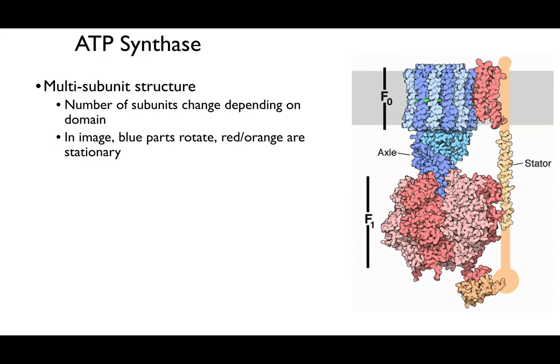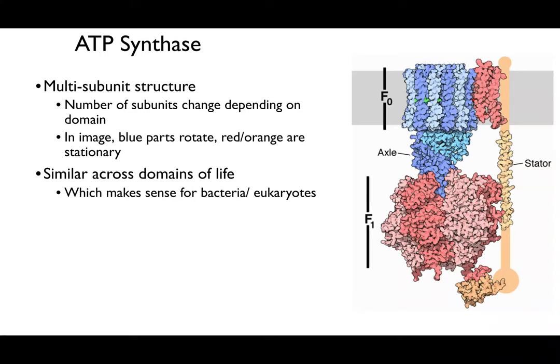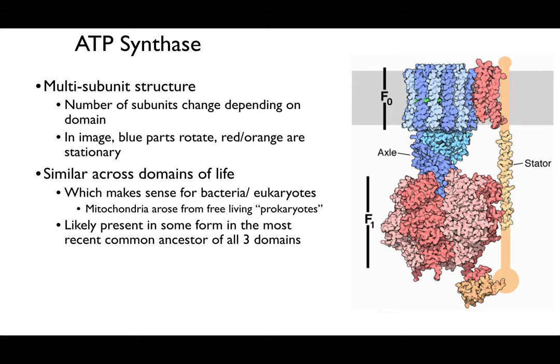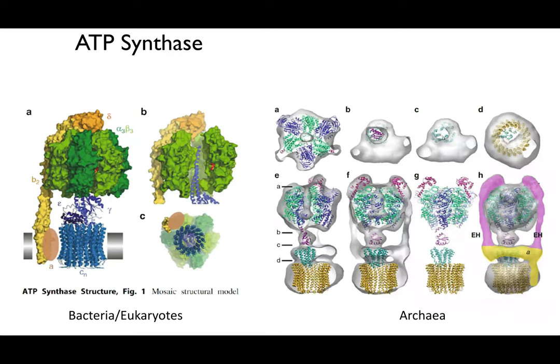ATP is produced by the enzyme ATP synthase, which has the same overall structure across domains. Think of it like a propeller that spins—the blue parts rotate, and the red-orange parts are stationary, like a fan. It is similar across all domains of life, suggesting it is an ancestor common to all three domains. Archaea have some additional pieces, but otherwise the structure is remarkably similar to bacteria and eukaryotes.